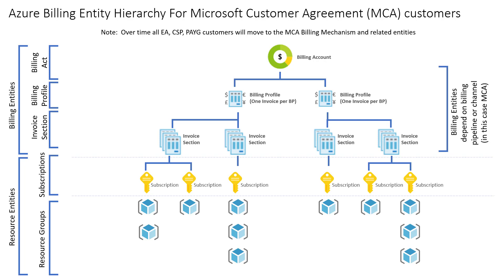For MCA customers, there is one billing account per agreement. But unlike the EA case, with MCA you can configure multiple billing profiles in the Azure portal, and each billing profile will be issued separate invoices, which can optionally be in different currencies. Each billing profile can be grouped and filtered separately in Azure Cost Management. Each billing profile can have multiple invoice sections, which will appear as a separate section in your invoice and can be grouped and filtered separately in Azure Cost Management.